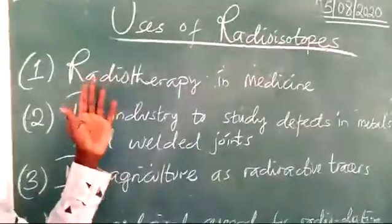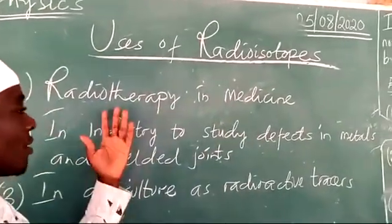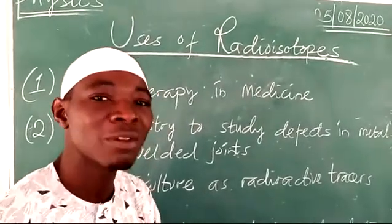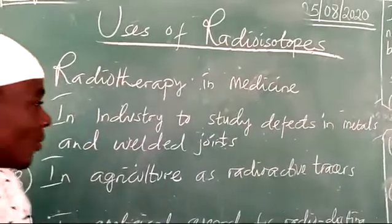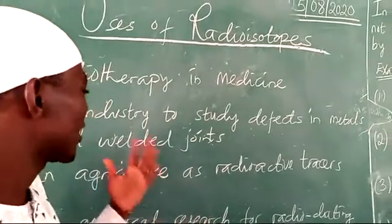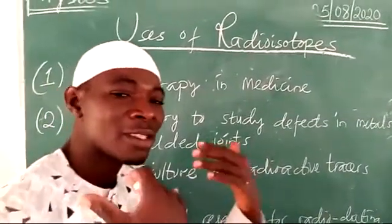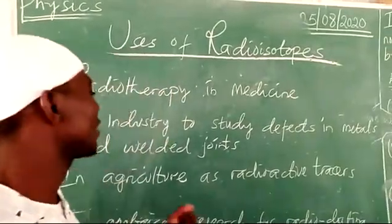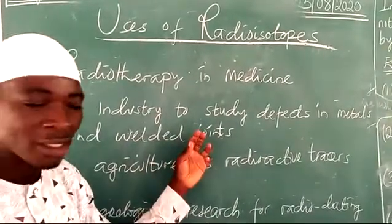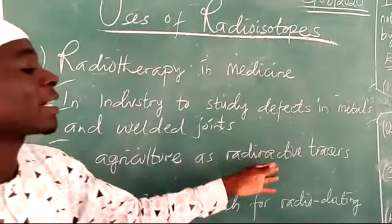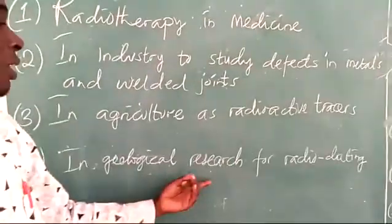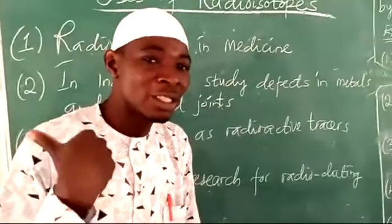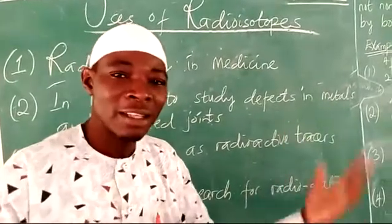They are used in radiotherapy — the use of ionizing radiation to kill and control cancer and malignant cells; we call that process radiotherapy. Secondly, in industry, because radioactive substances emitted in the process of radiation have high penetration ability, they are used to study defects in metals and welded joints. Thirdly, they are used as radioactive tracers in agriculture. Finally, in geological research, they are used for radio dating — to date rocks and other geological features, and you can even date the earth itself and other materials in the universe.